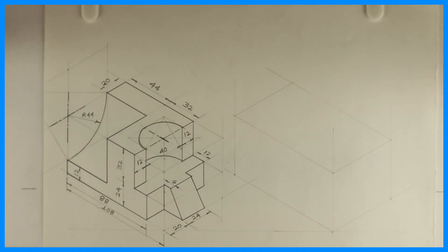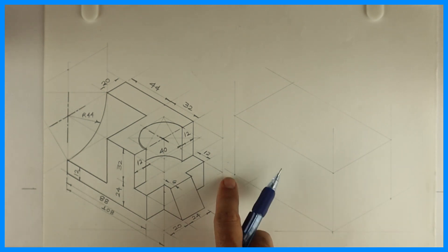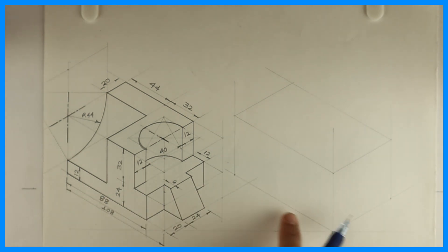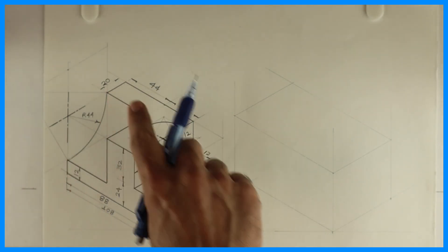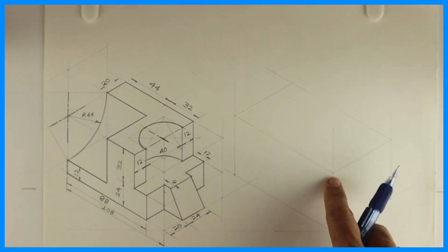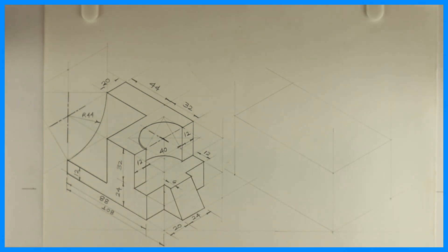Welcome to technical drawing. Today we're going to solve this sum in copy isometric. Now if you see, length is 108, width is 64 (44 plus 20), and height is 56 (24 plus 32). So first we will draw a layout.